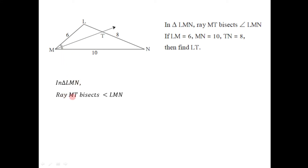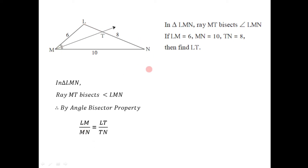In triangle LMN, ray MT bisects angle LMN. By the angle bisector property, the ratio of the two sides of the angle — LM and MN — equals the ratio of the segments of the opposite side. So LM by MN equals LT divided by TN. Substituting: 6 divided by 10 equals LT divided by 8. Transferring 8 to the left-hand side gives LT equals 8 times 6 by 10. Simplifying by dividing by 2 gives 4 times 6 by 5, which equals 24 divided by 5, so LT equals 4.8.